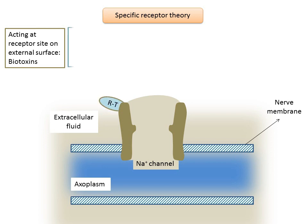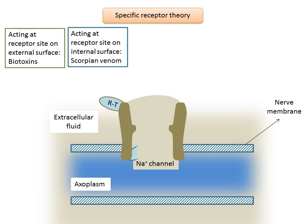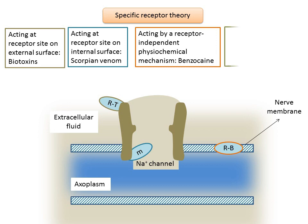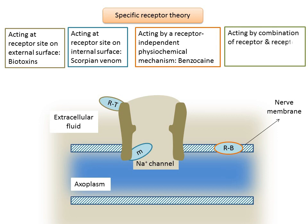Based on their ability to react with specific receptor sites in the sodium channel, local anesthetics can be classified into four categories. Class A: agents acting at receptor sites on the external surface of the nerve membrane, such as biotoxins like tetrodotoxin and saxitoxin. Class B: agents acting at receptor sites on the internal surface of the nerve membrane, such as quaternary ammonium analogs of lidocaine or scorpion venom. Class C: agents acting by a receptor-independent physicochemical mechanism, such as benzocaine. Class D: agents acting by a combination of receptor and receptor-independent mechanisms, which include the most clinically useful local anesthetic agents such as articaine, bupivacaine, lidocaine, mepivacaine, and prilocaine.